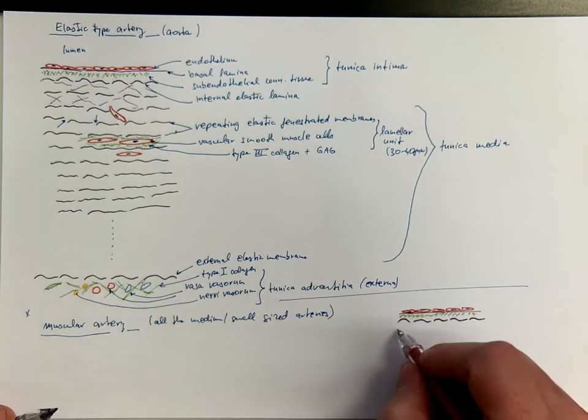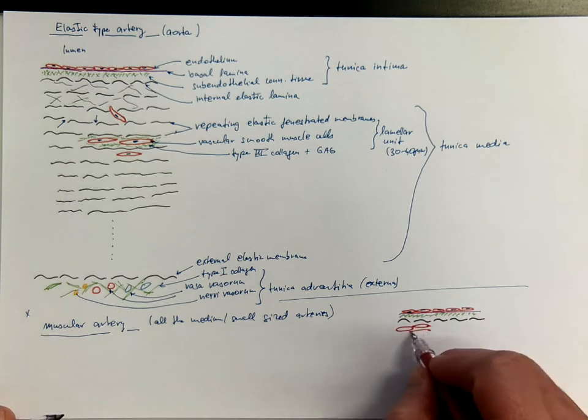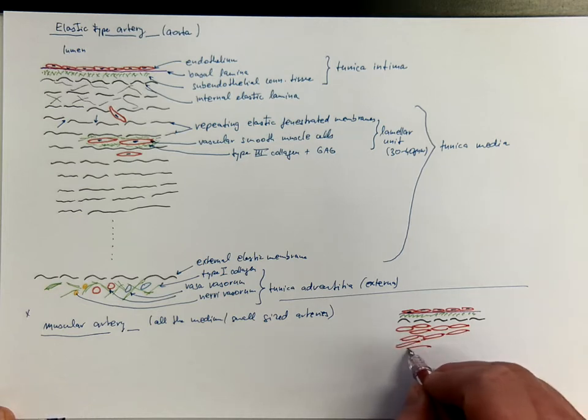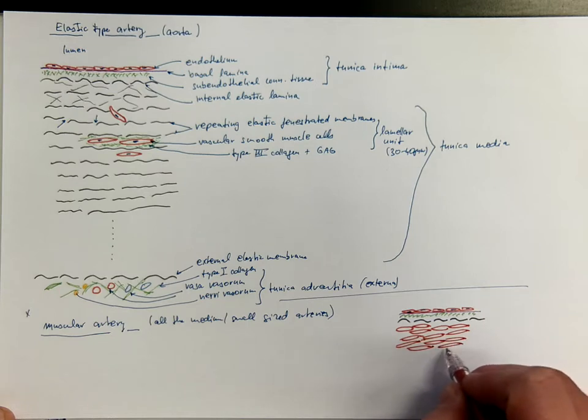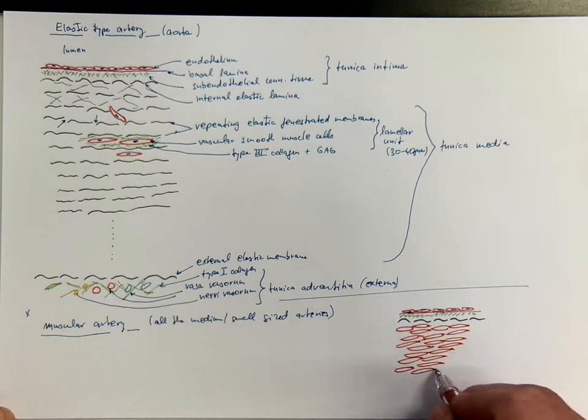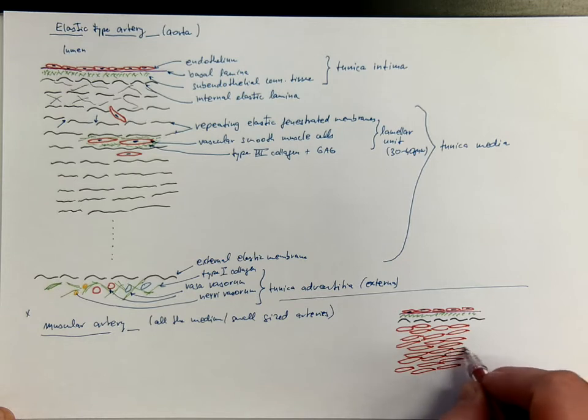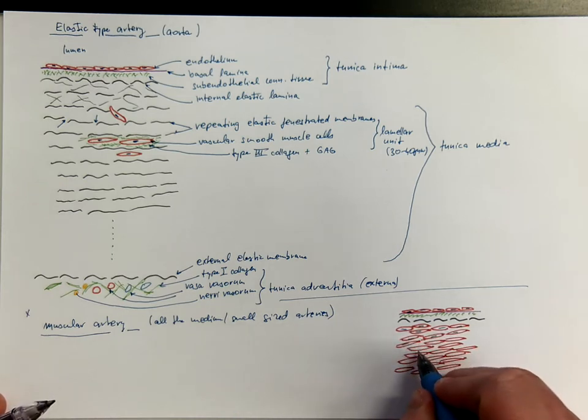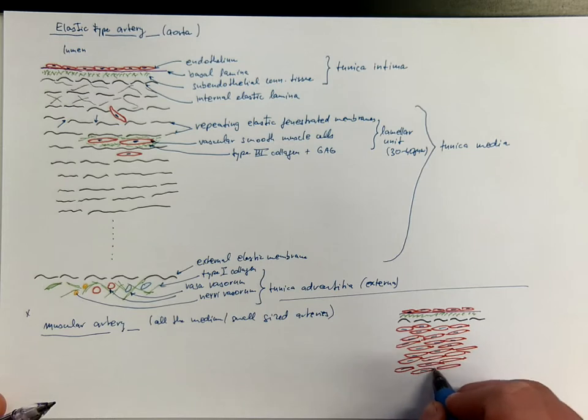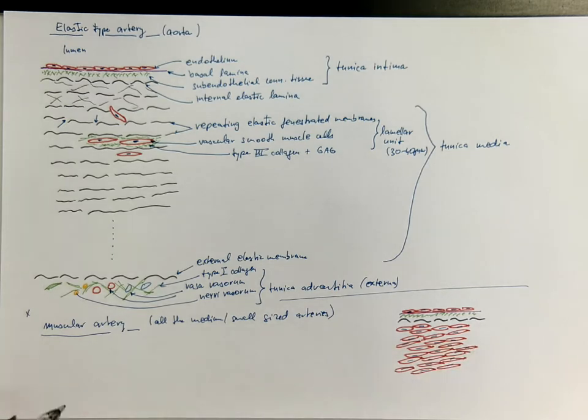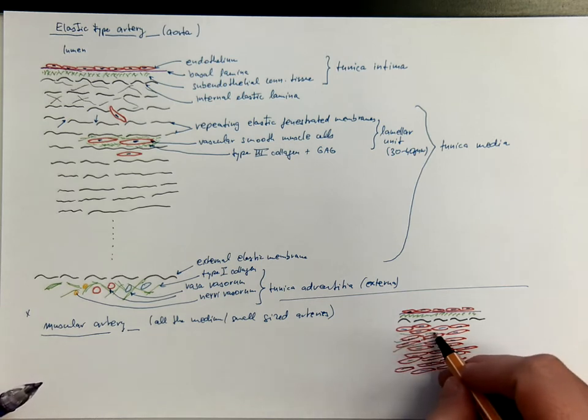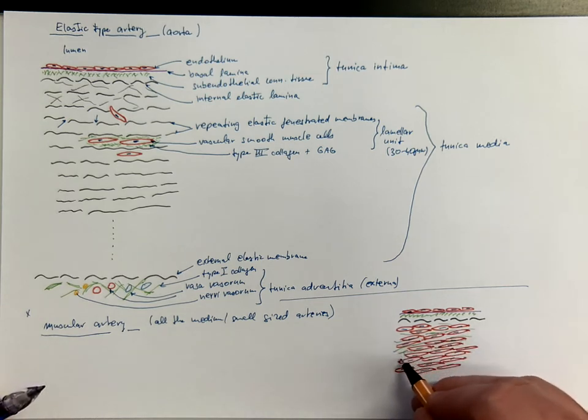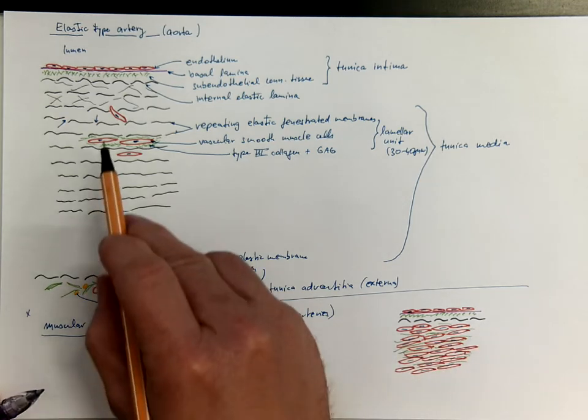But then the media, the thickest layer in arteries, is made mostly, consists of vascular smooth muscle cells, very densely packed, in a very compact manner. Now I will add the nuclei in the middle, the vascular smooth muscle cells. And there is type III collagen, here in the matrix. And some glycosaminoglycans, but no repeating elastic membranes.